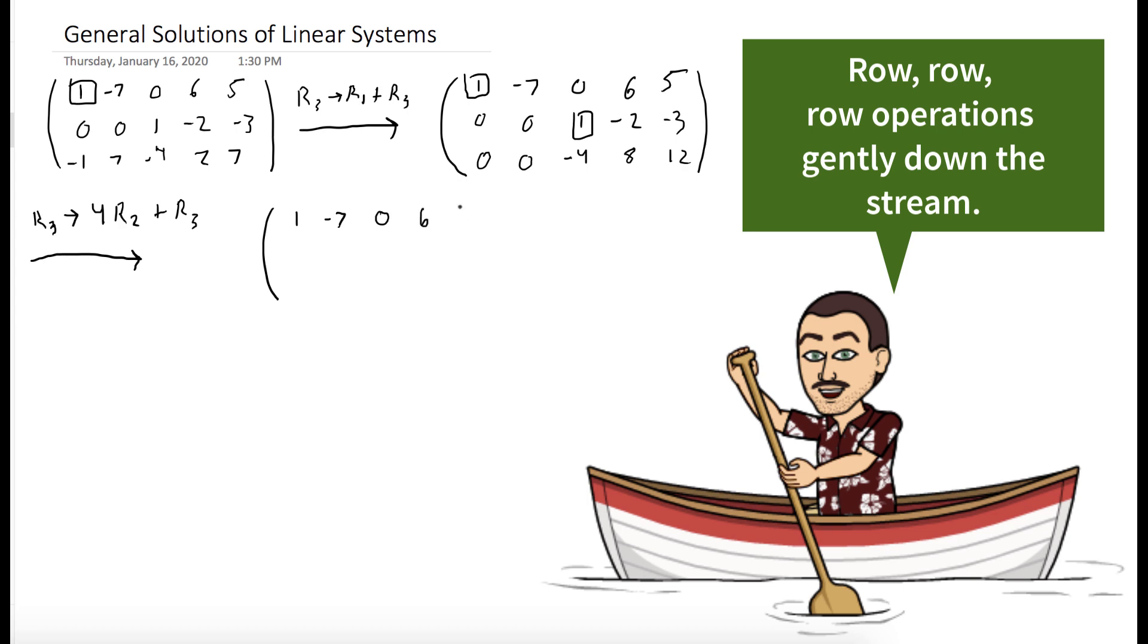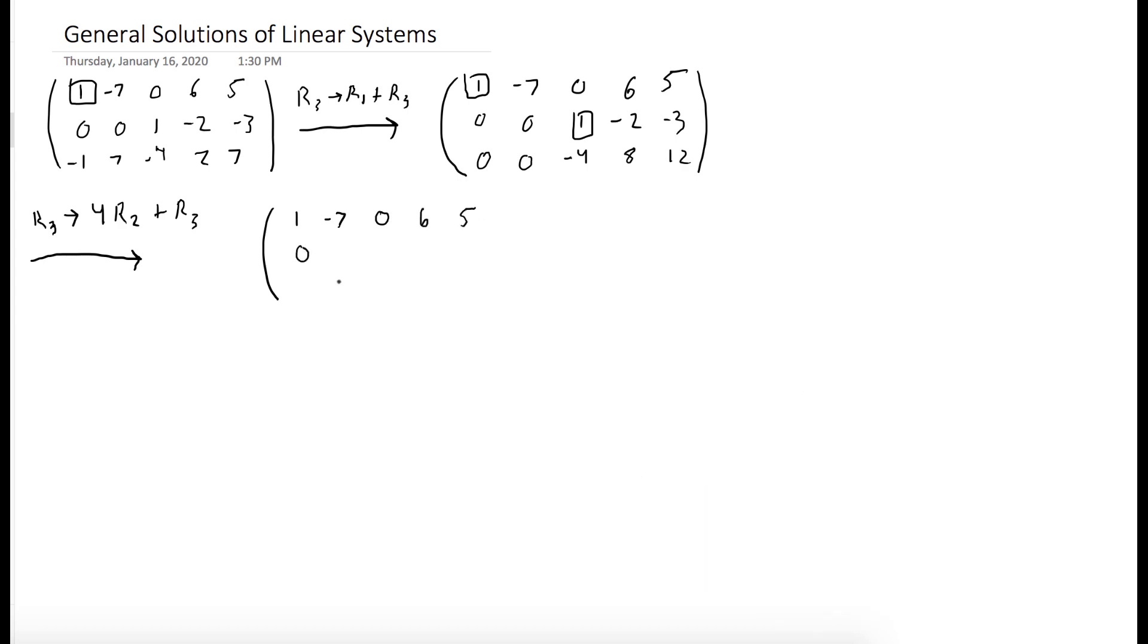And what we get is this matrix. The first row stays the same. The second row stays the same. And you can see the third row just becomes all zeros.